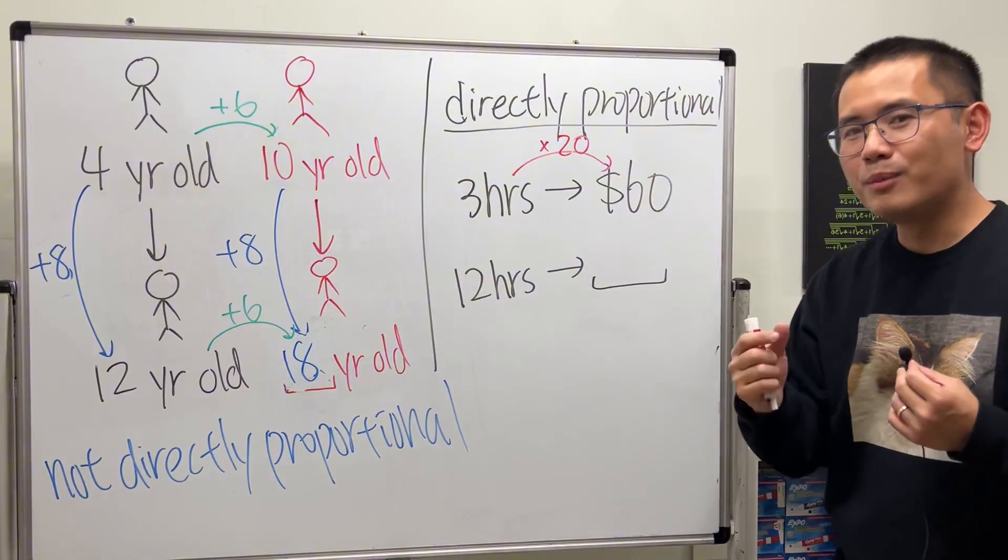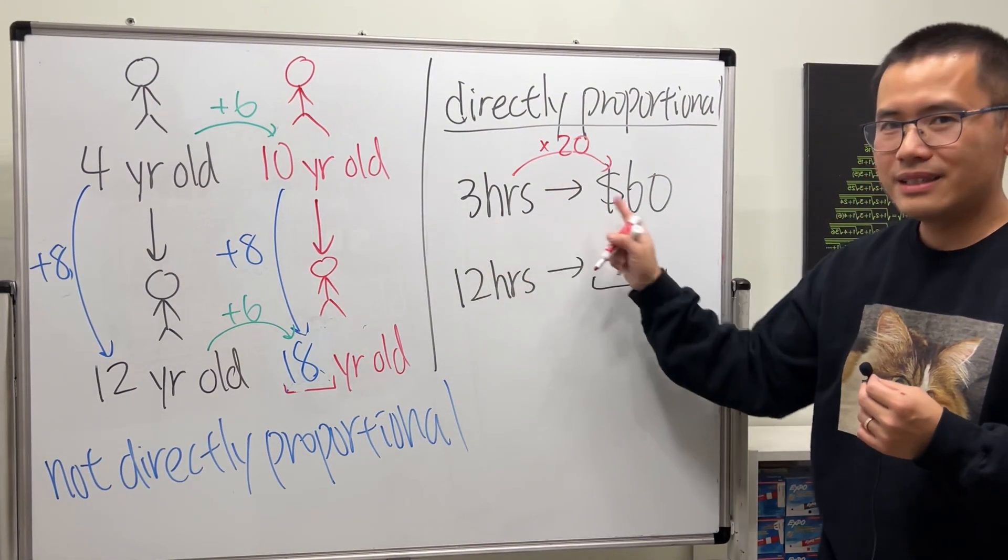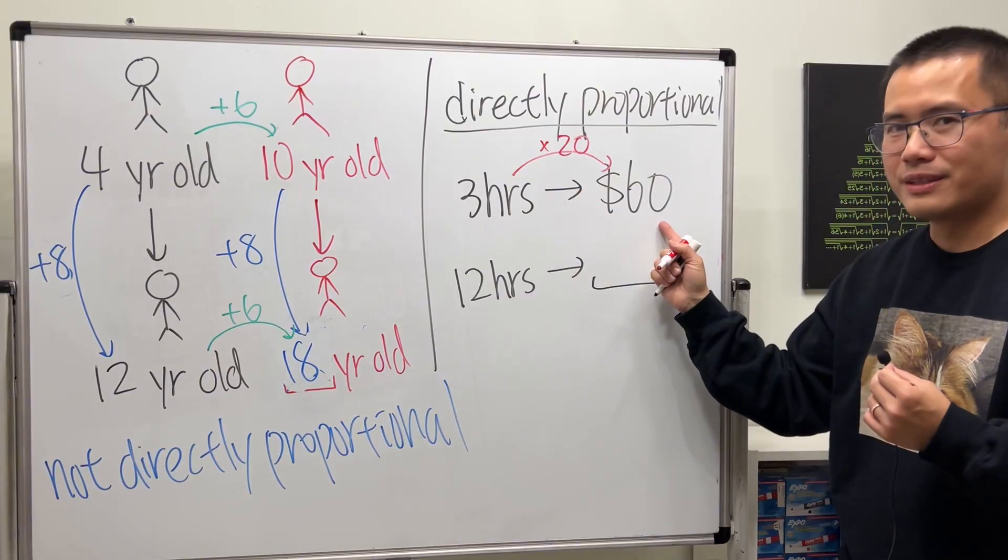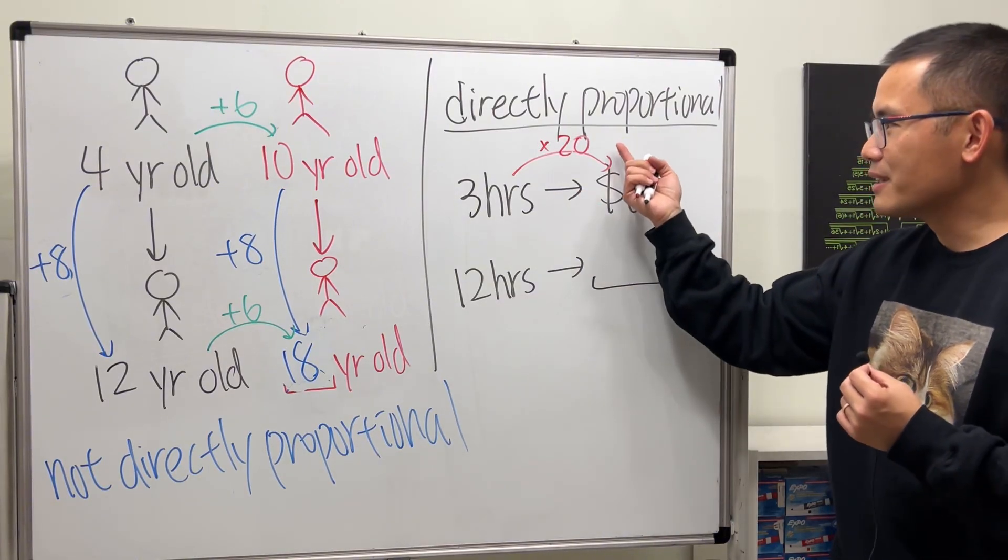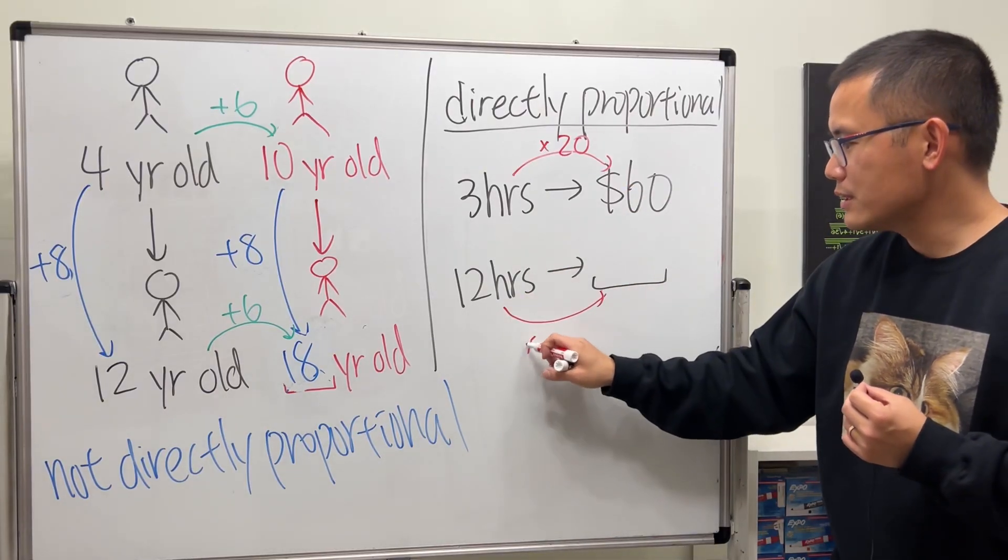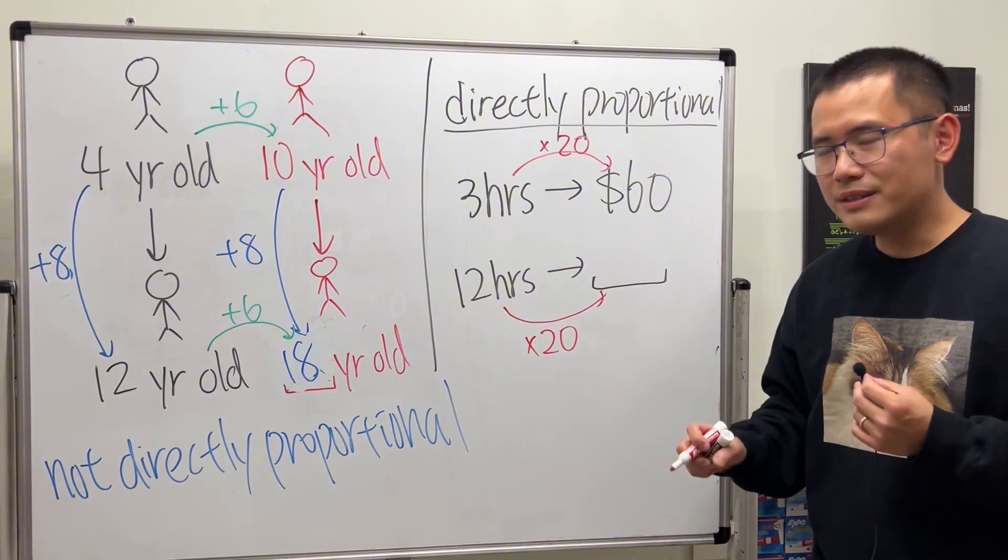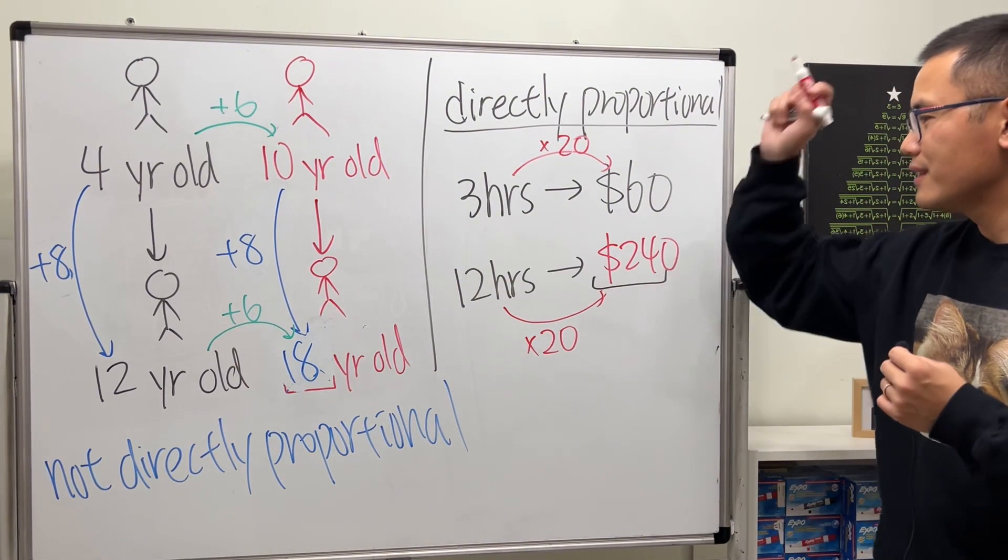And the 20 means what? 20 is actually how much money you get paid per hour, right? Three hours, sixty dollars, so each hour is twenty dollars. And then under the same situation we can just multiply 12 hours by twenty dollars and you end up with a total of 240 dollars.